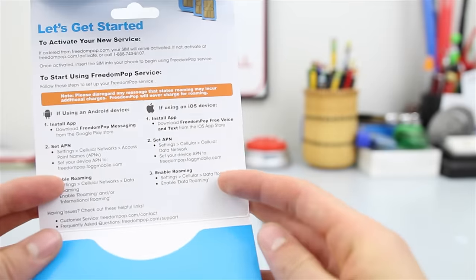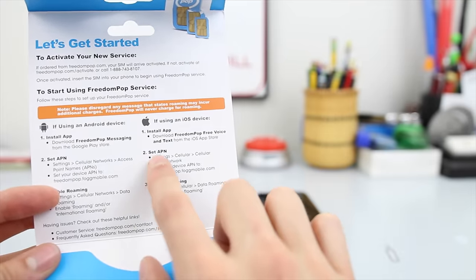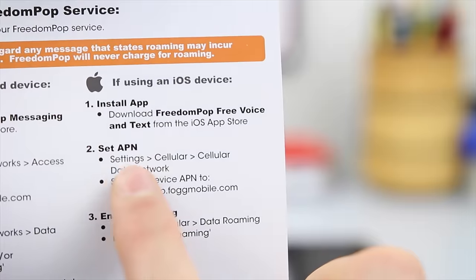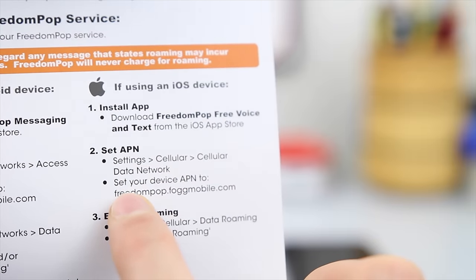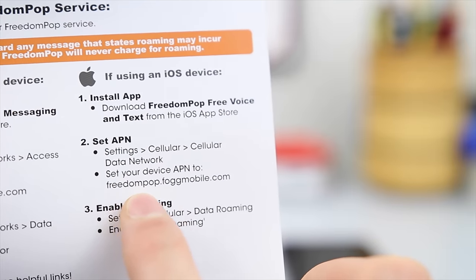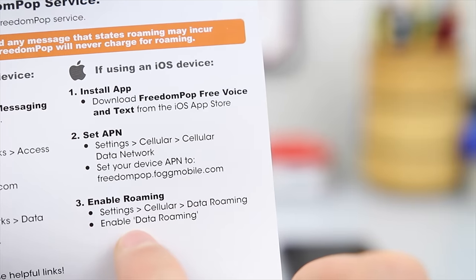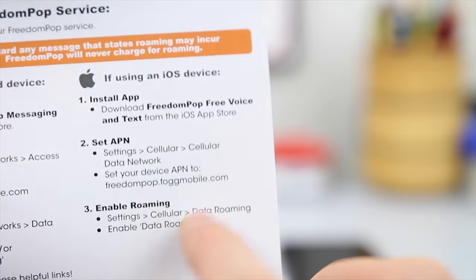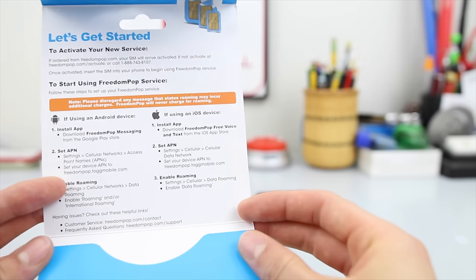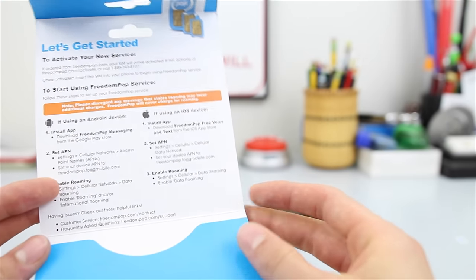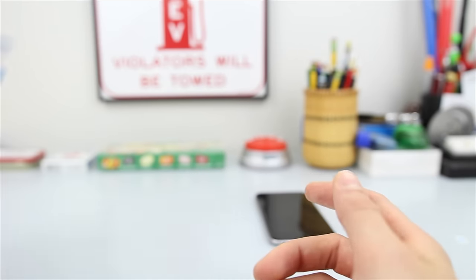So if you open this up, you can see here it says Set APN. You want to go to Settings, Cellular, Cellular Data Network, and set your device APN to freedompop.fogmobile.com. So in this video, I'm going to be showing you how to do that — how to get cellular data working on the Freedom Pop network.